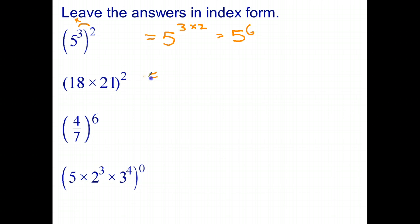If we've got a product, 18 times 21 raised to a power, we can write that without brackets by just putting the power on the 18 and 21 raised to the same power.